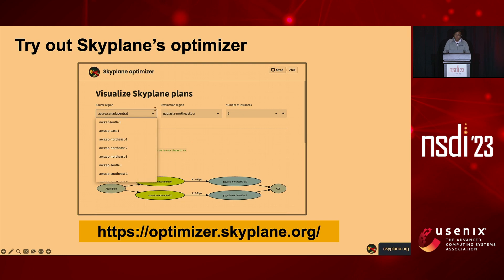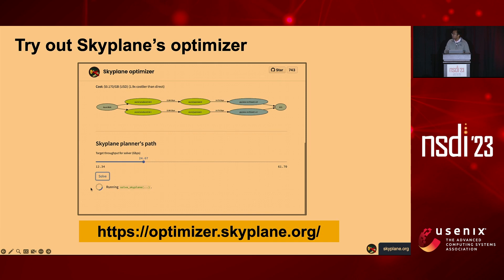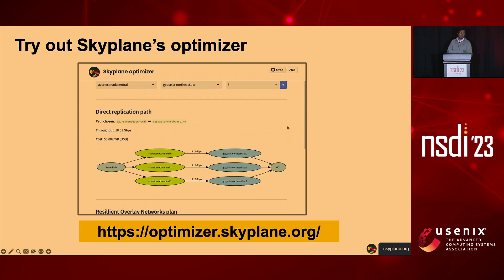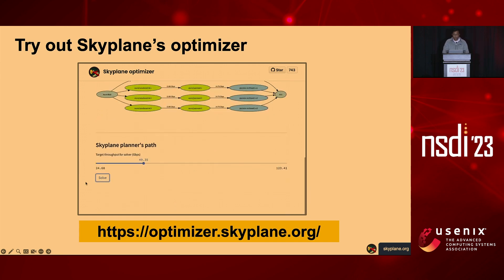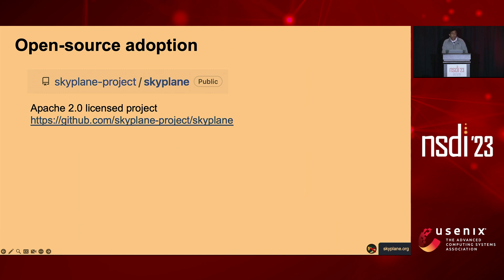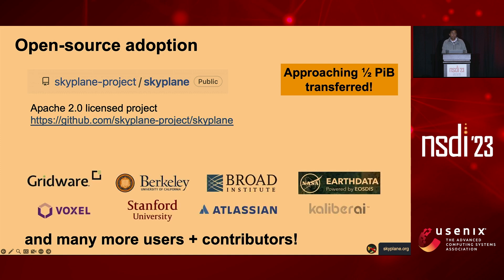Skyplane is open source, and I've also set up a dashboard for the conference where anybody can play with the optimizer and see the performance and routing topology for any given source or destination—punch in your favorite source cloud and region and see what the optimal Skyplane routing topology would be. We open sourced the project last year under the Apache 2 license and have seen rapid adoption. We are approaching half a petabyte of data transferred to date using Skyplane from a wide set of organizations, with a large set of users and contributors.